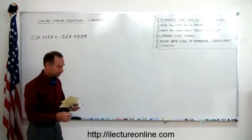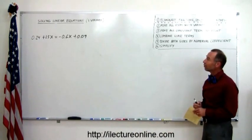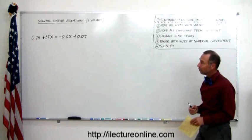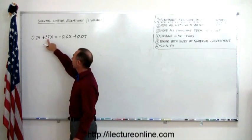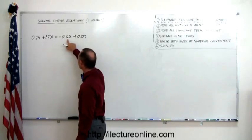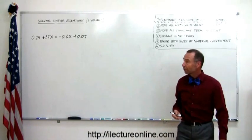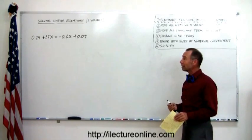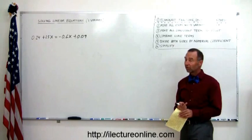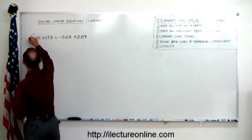Okay, so, again, step number one, eliminate fractions, decimals, and parenthesis. Clearly we have decimals here, but notice that this number here has two decimal places, this number here has just one, this number here has one, this number has two. And the rule is, however many decimal places you have, you multiply both sides of the equation with a one and that many zeros behind it. So, in this case, two decimal places, one with two zeros means, multiply both sides of the equation by 100.